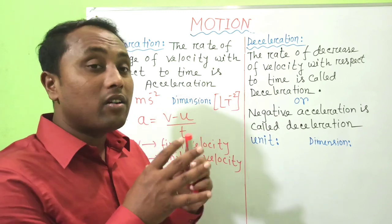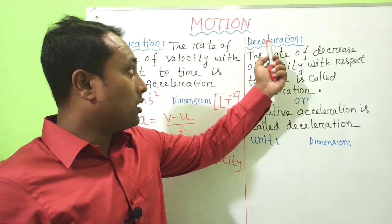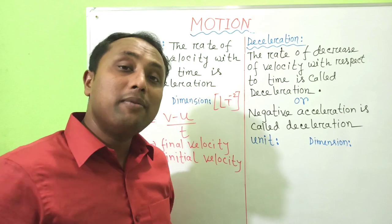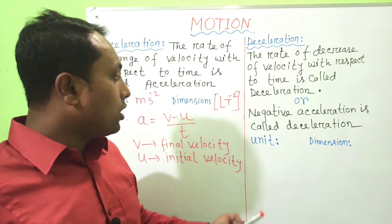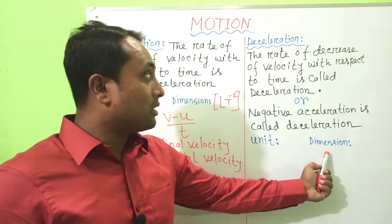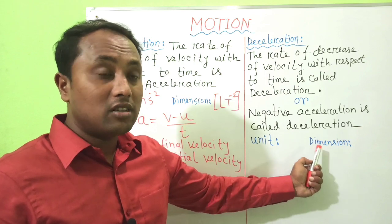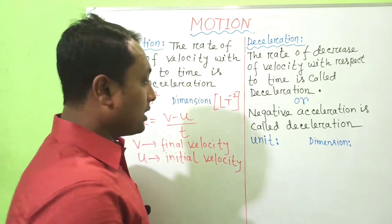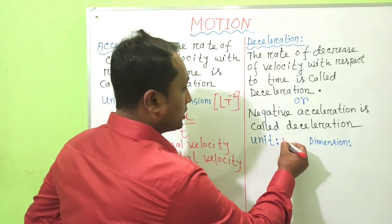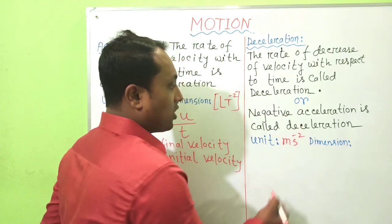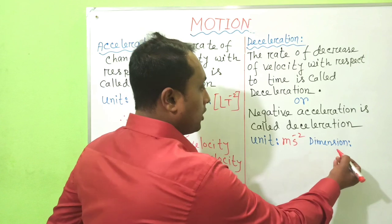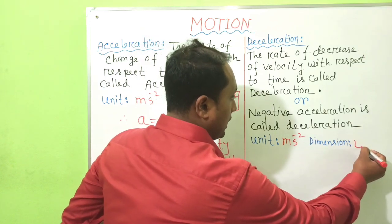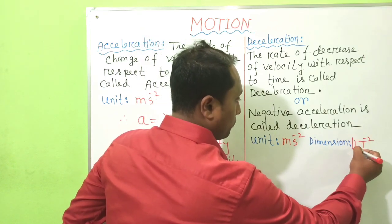Deceleration is basically negative acceleration. The unit of deceleration is also meter per second square, and the dimension of deceleration is LT⁻².